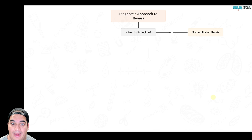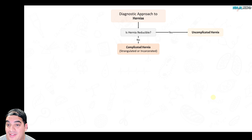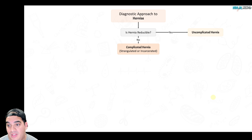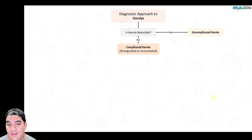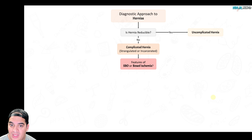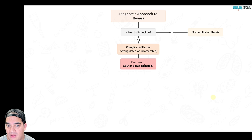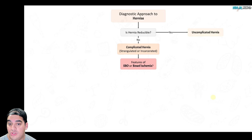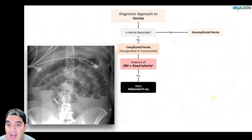An uncomplicated reducible hernia can be managed electively — surgically repaired if it consistently causes problems, but not an emergency. If it's not reducible, you have a complicated hernia that could be strangulated or incarcerated. The next question is whether there are features of small bowel obstruction or bowel ischemia. Start with an abdominal X-ray.